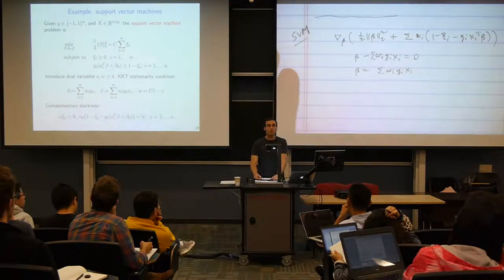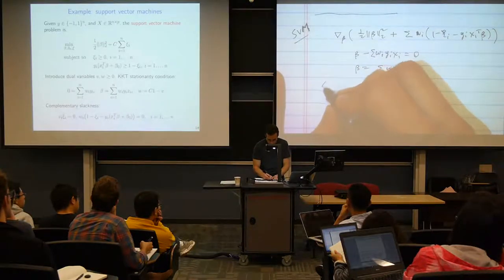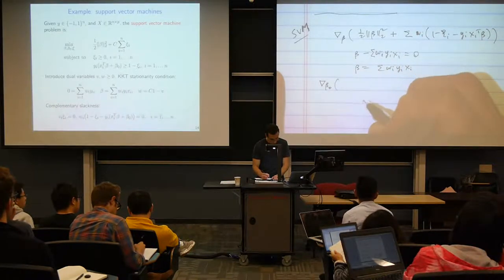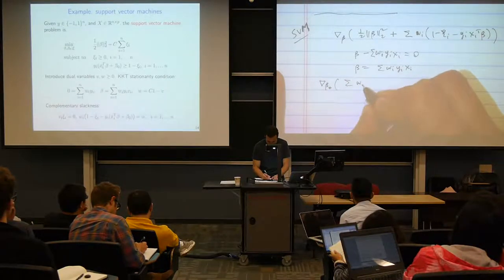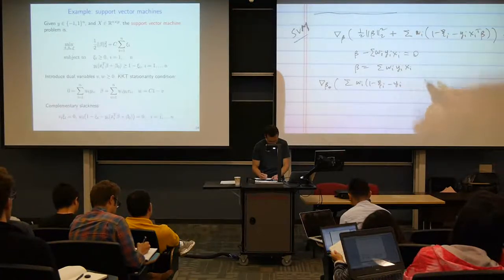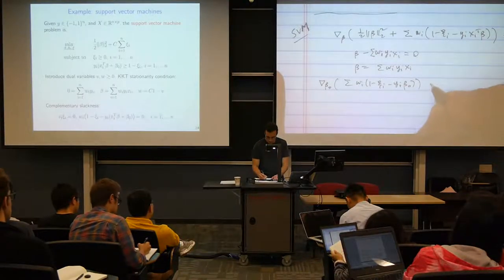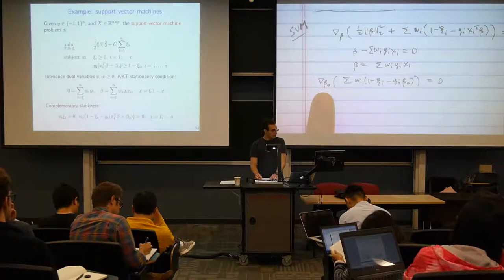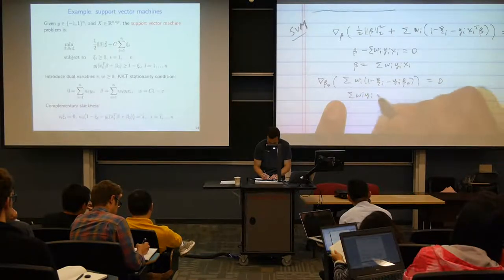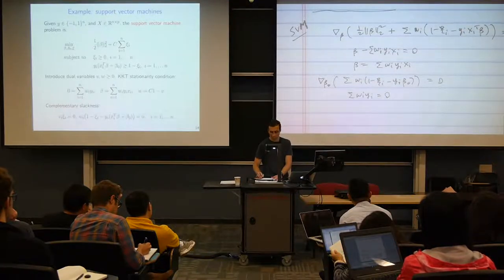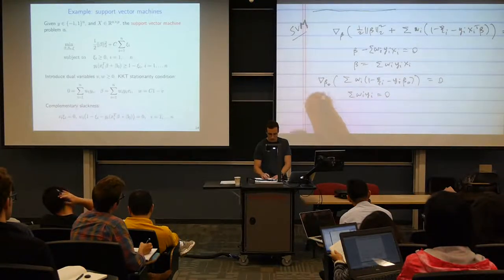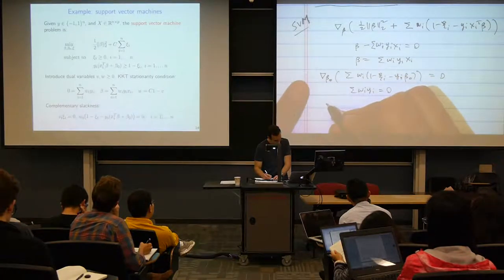Let's do the same thing for beta naught. The only terms involving beta naught come from the constraints, and taking the derivative with respect to beta naught gives us that the sum of W_i times y_i must equal zero. Beta naught is just a scalar variable, so this is an ordinary derivative.